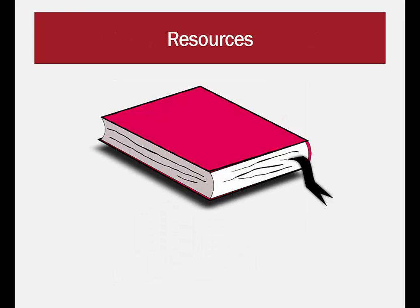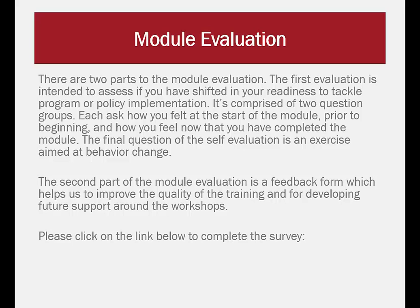Here you will find some recommended resources and readings on implementation if you would like further information. There are two parts to the module evaluation. The first is intended to assess if you have shifted your readiness to tackle program/policy implementation. It is comprised of two question groups, each asking how you felt at the start of the module and how you feel now that you have completed it. The final question of the self-evaluation is an exercise aimed at behavior change.